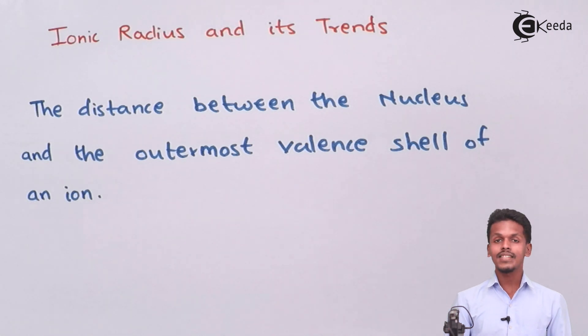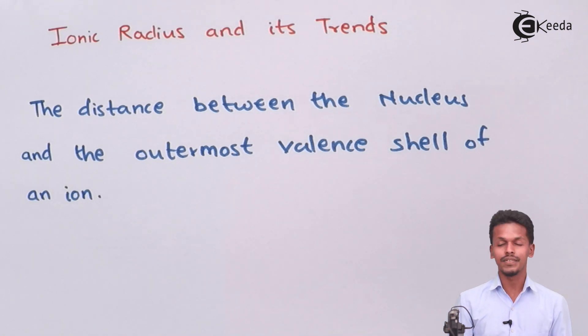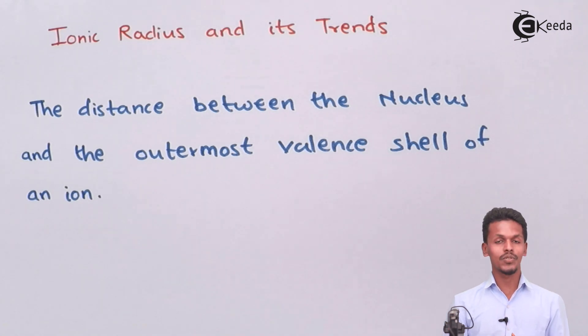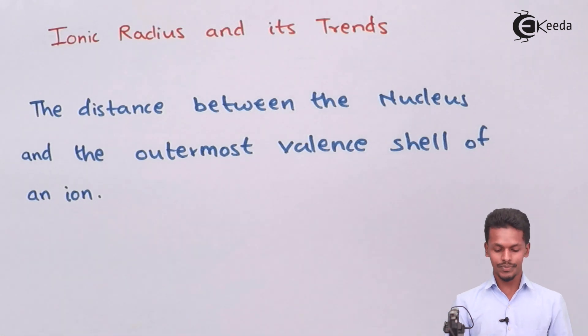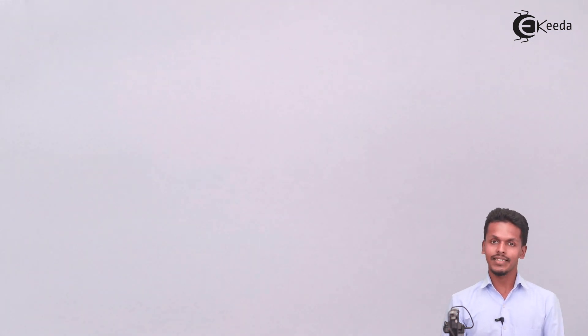So now we are going to talk about the trends or the variation that we observe — the variations in periods and in groups. Ionic size is similar to that of atomic size, as we studied earlier.